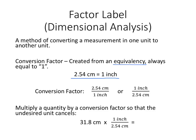So if you put 2.54 centimeters over an inch, that's the same as saying 12 divided by 12 is equal to 1 because the top number and the bottom number are equal. Or you could flip it and it's still equal to 1 because the top number and the bottom number are equal. So we're going to multiply a quantity by conversion factor so that the undesired unit cancels. Let's take 31.8 centimeters. I'm going to multiply it by the conversion factor that has centimeters on the bottom so that they'll cancel.